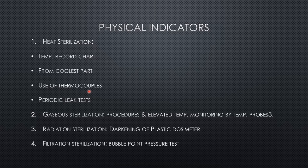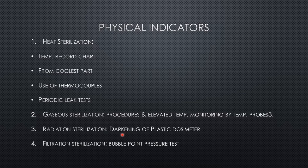In case of gas sterilization procedures, elevated temperatures are monitored for each sterilization cycle. Temperature, pressure, and humidity measurements are recorded, and gas concentration is measured by increasing the pressure. In case of radiation sterilization, plastic dosimeters which gradually darken in proportion to radiation absorbed are used. These dosimeters give an accurate measurement of the radiation dose, and by this plastic dosimeter the radiation sterilization procedure can be monitored.